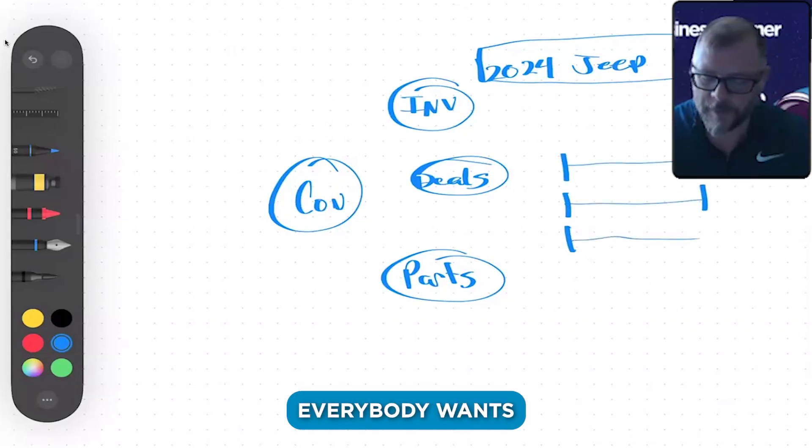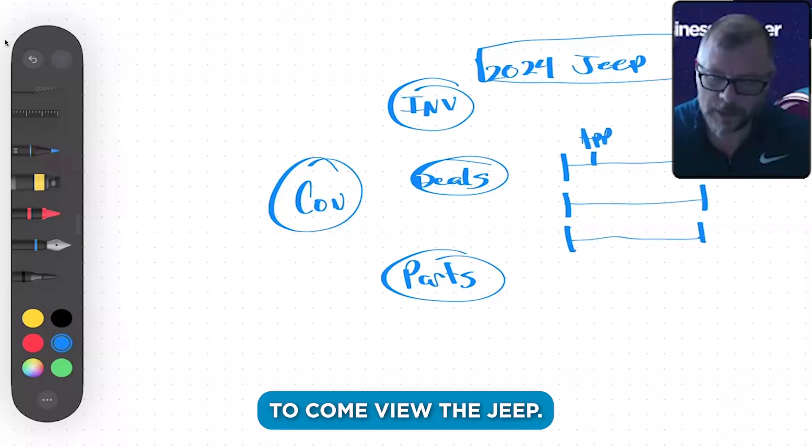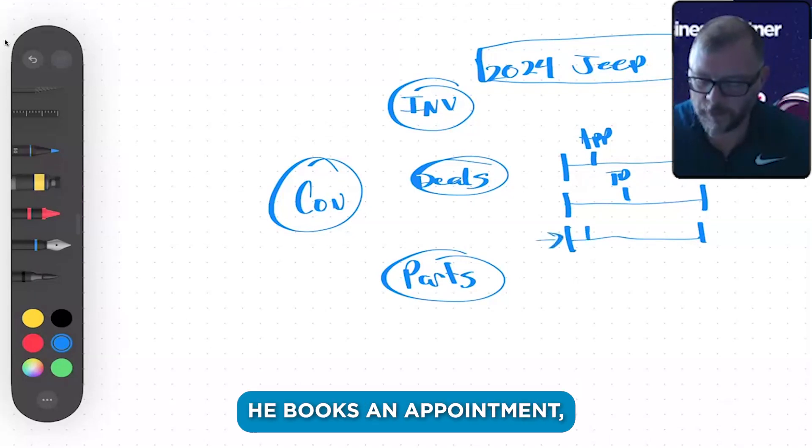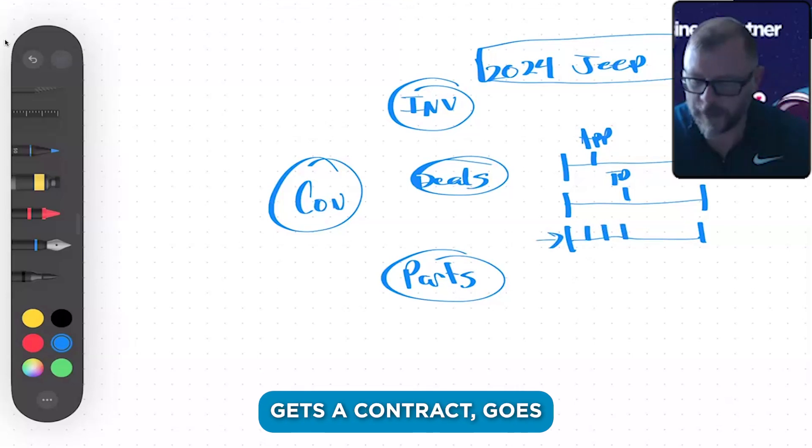If you have three deals on the Jeep, so three people came in, three people want the Jeep, everybody wants to be a negotiator. This guy has an appointment scheduled to come view the Jeep. This guy has test drove the Jeep and been offered something—he's still negotiating on the price. He's going to go drive other Jeeps and think about it. And then a new guy comes in. He goes through, he books an appointment, comes in same day, does a test drive, gets a contract, goes into finance.